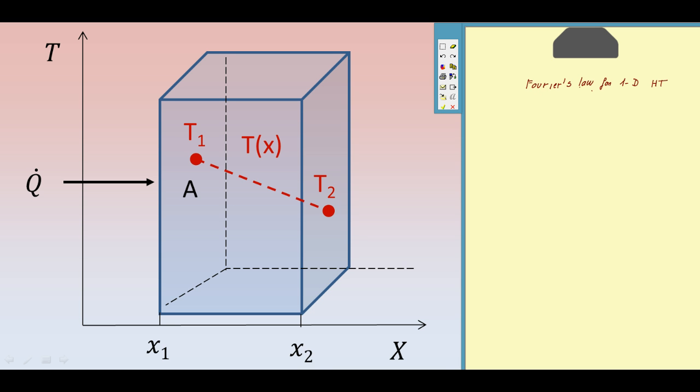Fourier's law for one-dimensional heat transfer: The heat flux in x-direction is proportional to the thermal conductivity and the temperature gradient in the x-direction. Minus sign is a consequence of the fact that the heat is transferred in the direction of decreasing temperature.